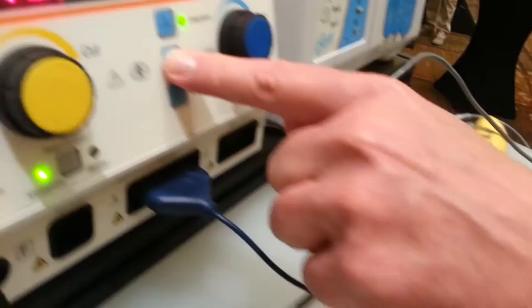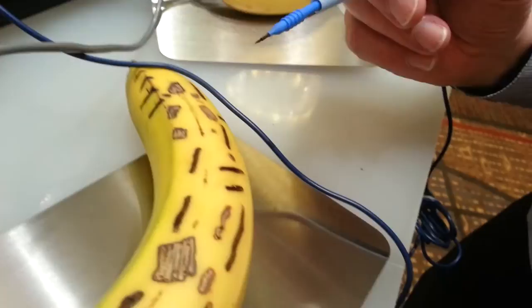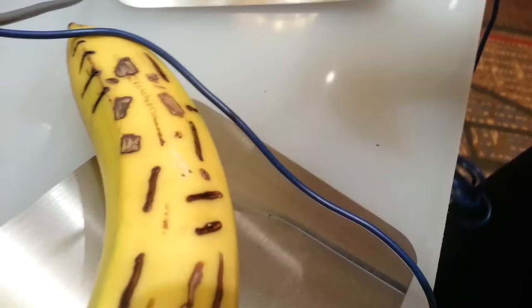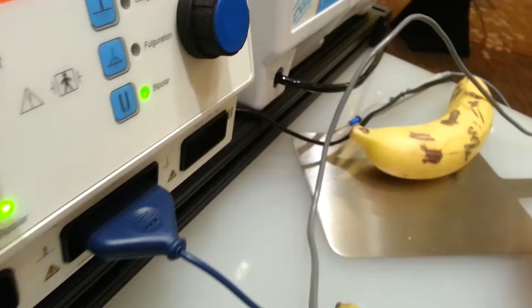Then I have my second coag function, fulgurization. This is a light cauterizing, and how I do that is I come right above the surface of the tissue, and basically I do a painting style, and I'm allowed to dry out all the little bleeders.